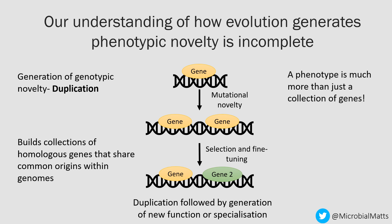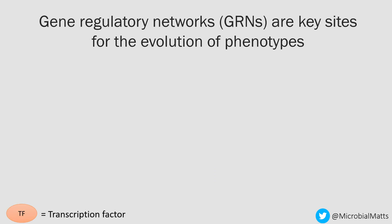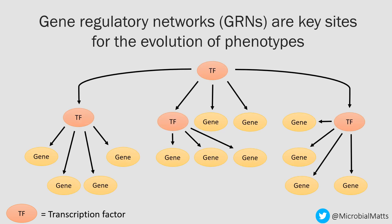However, a phenotype is a lot more than just a collection of genes and novel genes within a genome. So we need to develop a better understanding of the evolution of the genotype to phenotype map for an organism. A key determinant of this map are the structures of gene regulatory networks — collections of transcription factors, cis-regulatory elements, and other control systems that determine the timing and magnitude of gene expression within a cell.